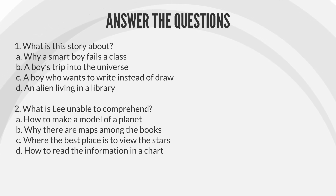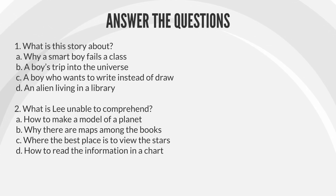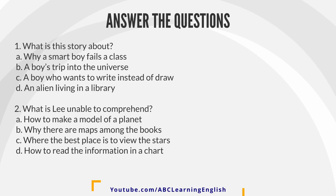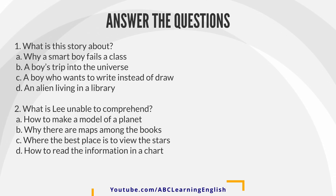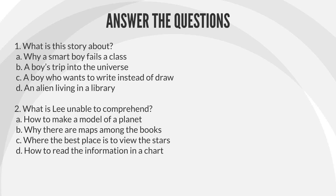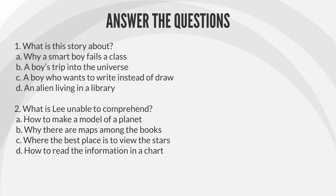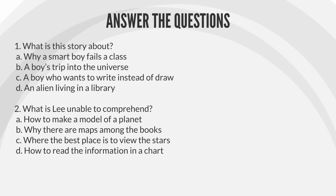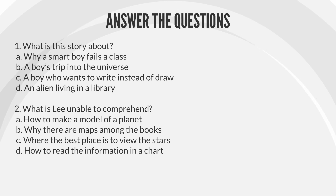Question 2: What is Lee unable to comprehend? A. How to make a model of a planet. B. Why there are maps among the books. C. Where the best place is to view the stars. D. How to read the information in a chart.